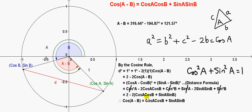We compare the two expressions for D²: from the cosine rule we have 2 − 2cos(A − B), and from the distance formula we have 2 − 2(cosA·cosB + sinA·sinB). Since these are equal, subtracting 2 from both sides and dividing both sides by −2 gives us the result: cos(A − B) = cosA·cosB + sinA·sinB.